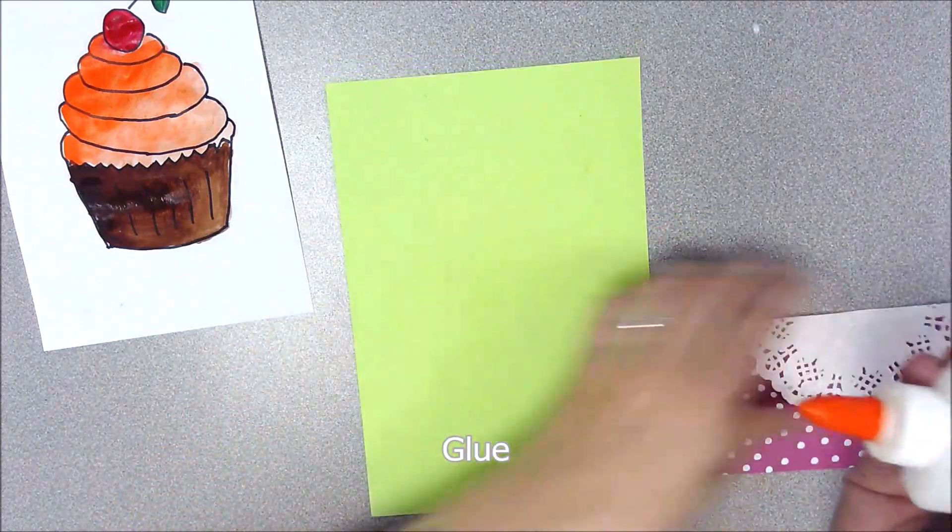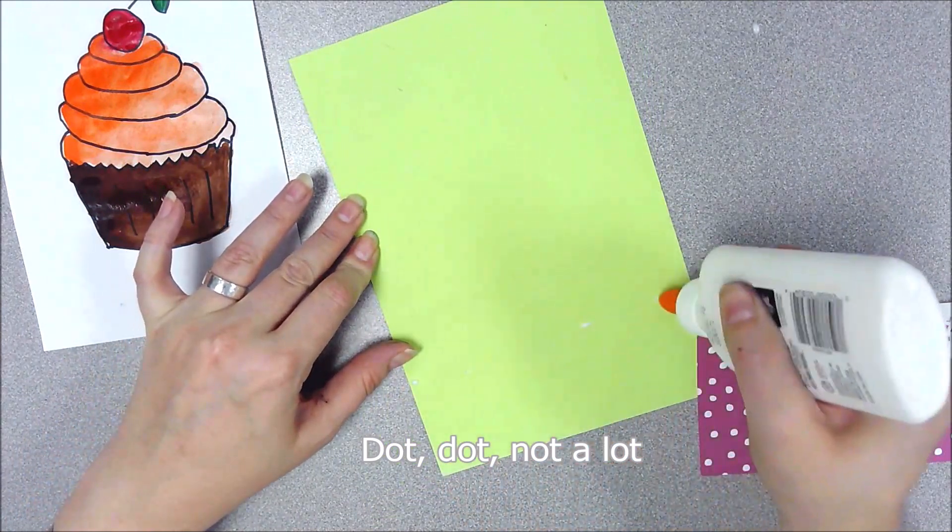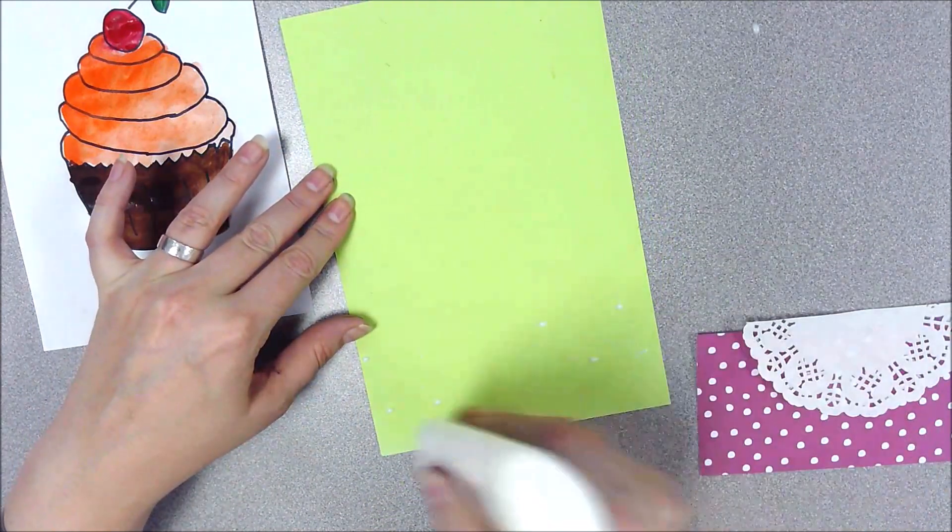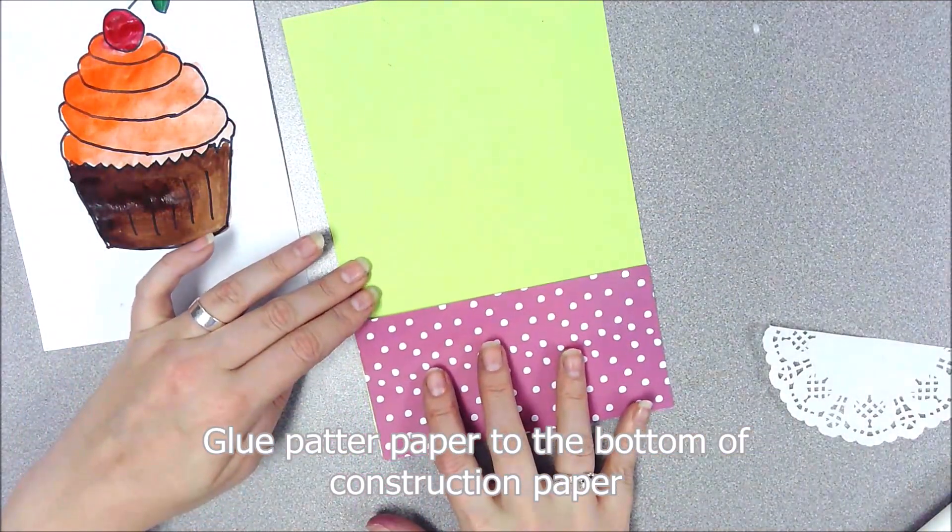open up the glue. Put a few little dots. Place this guy on top.